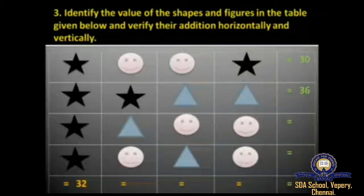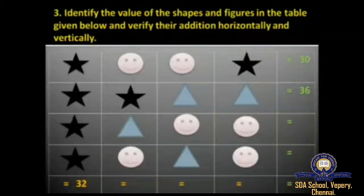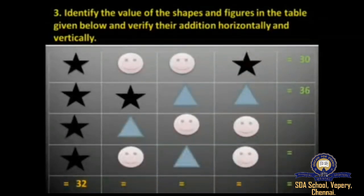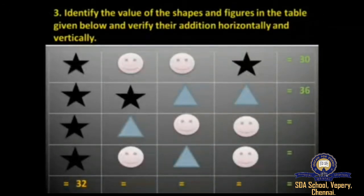The value of a star is 8. The first row contains two stars, so 8 plus 8 equals 16. But the total for the first row is 30, so when we subtract 16 from 30 the remaining value is 14. This 14 is split equally between the two smiley faces in the first row, so 14 divided by 2 equals 7. The value of a smiley face is 7.